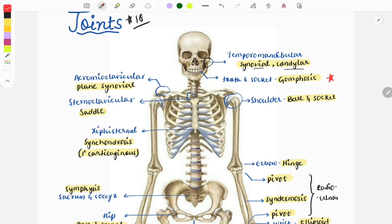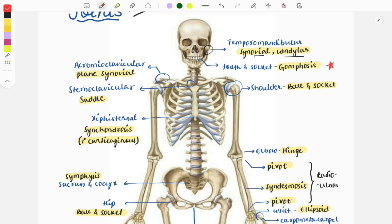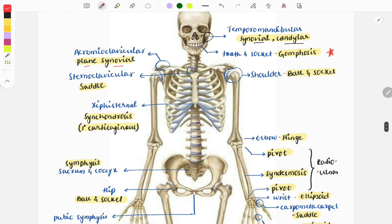This is a very unique name so it will be easily remembered. Moving on, acromioclavicular joint is a plane synovial kind of joint. The sternoclavicular joint, the joint between the sternum and the clavicle, is a saddle joint.